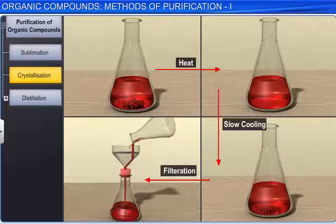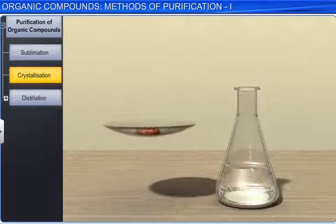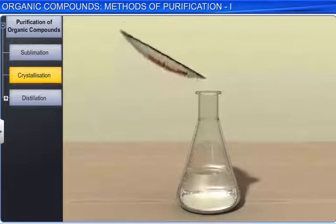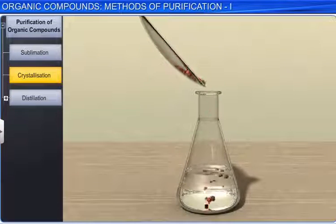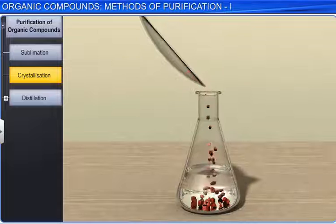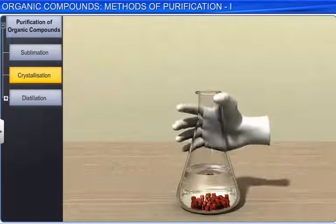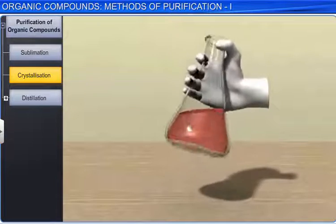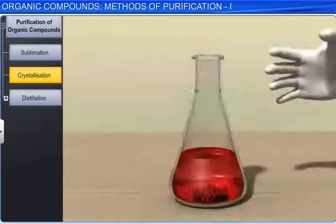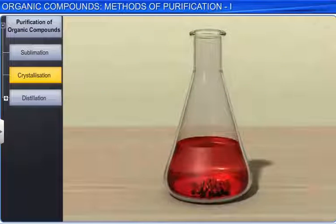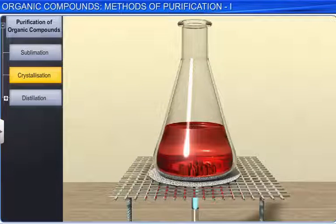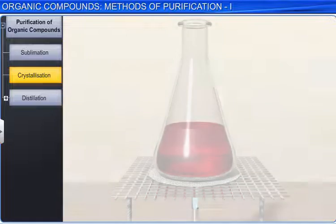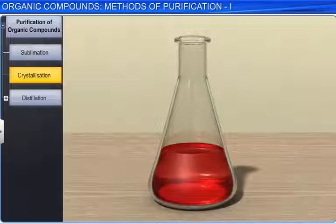In this process, first, the impure compound is dissolved in a solvent in which the compound to be purified is moderately soluble at room temperature and highly soluble at higher temperature. The solution is heated to get a nearly saturated solution. This saturated solution is then cooled to obtain the compound in its pure crystal form.